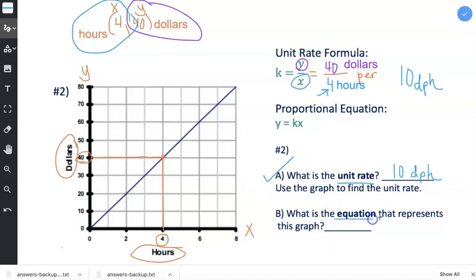Next, we have to write an equation that represents this graph line. So I look back at the proportional equation and we found k to be 10. Remember k is the unit rate. It's also called the constant of proportionality.